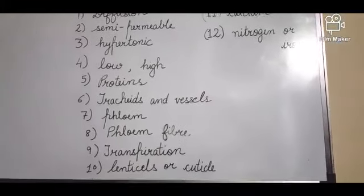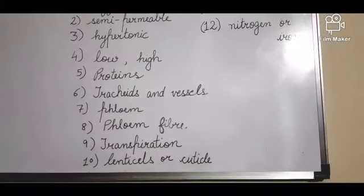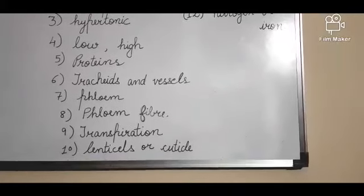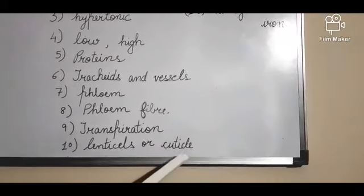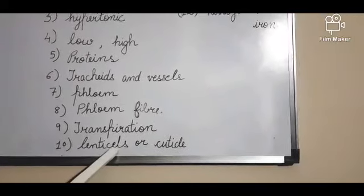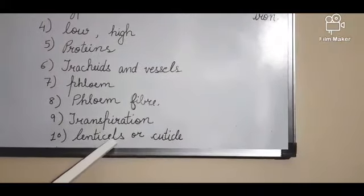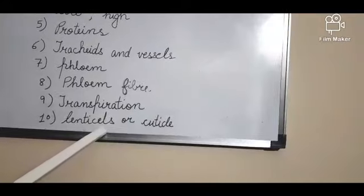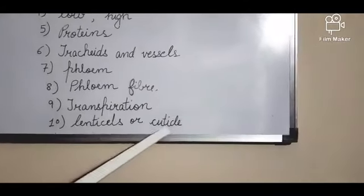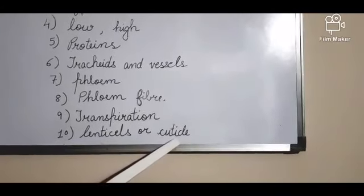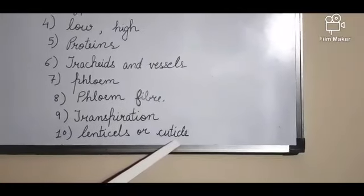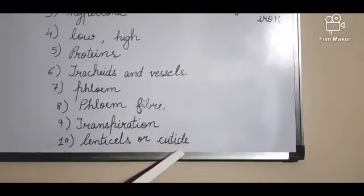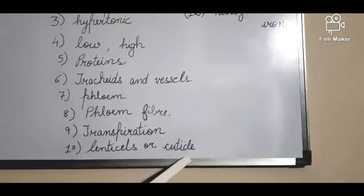Then transpiration may continue at a lower rate at night. Night me transpiration kahan se hote hai, kis structure se hote hai - these are the lenticels or the cuticles. Lenticels are small openings on stems and fruits that remain open, never close. So through these openings on old stems or cuticle, which is the waxy layer around the stems, transpiration occurs at low rate at night.